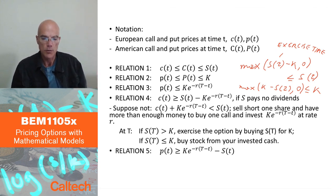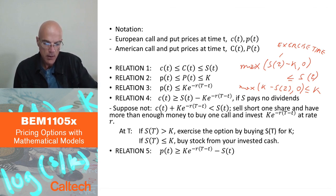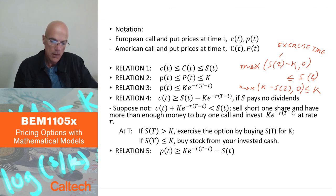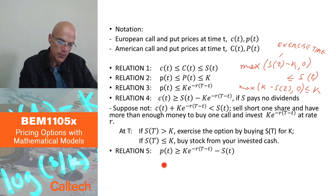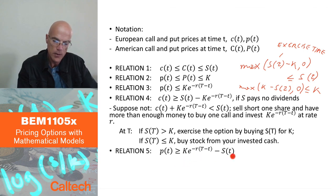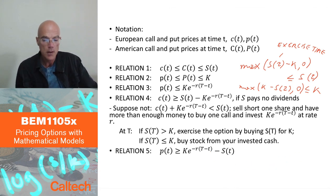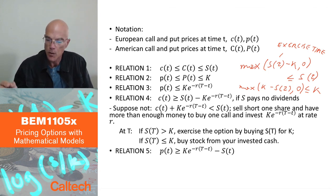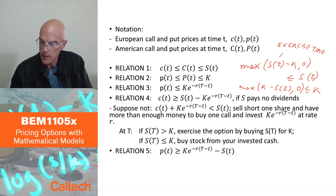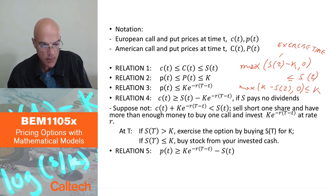A similar relation holds for puts: the price of a European put has to be larger than the discounted strike price minus the price of the underlying. The same logic applies — I'll leave the proof to you. So those are the first five relations for option price bounds.